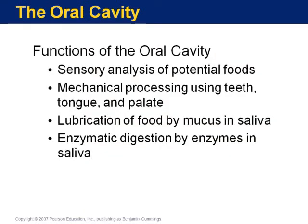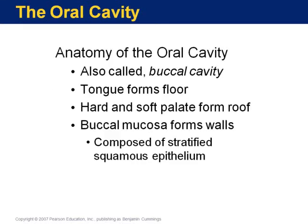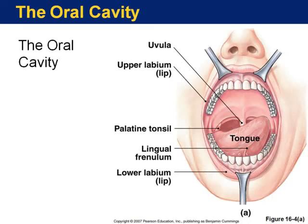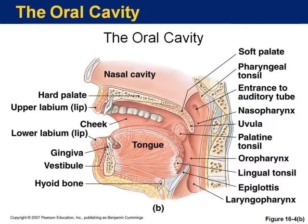Basically the functions of the oral cavity — you should know that the oral cavity starts the digestion of starches. That's where it begins with an enzyme called amylase. I'm not going to get into the anatomy so much of the oral cavity or the functions of the tongue. You are not going to have to label the oral cavity or its parts.